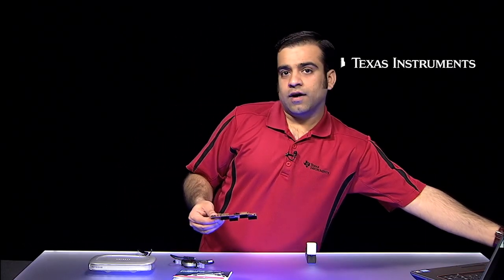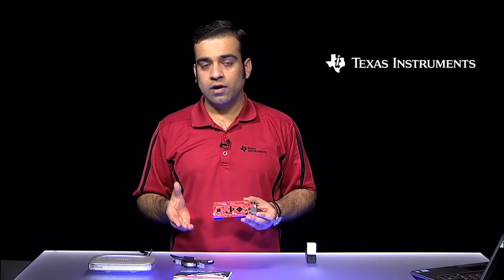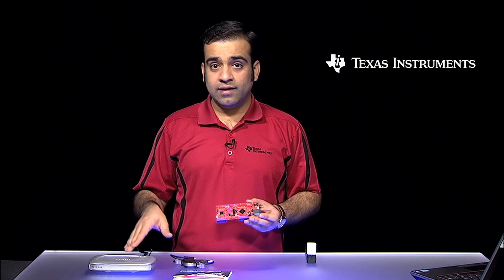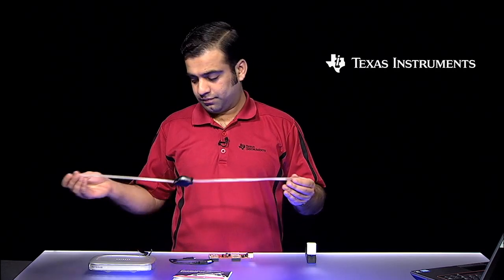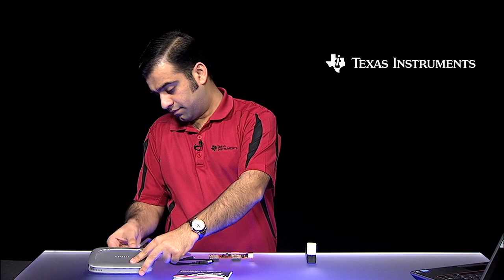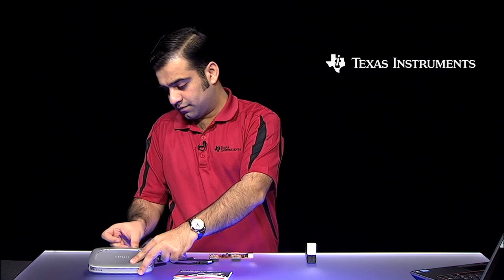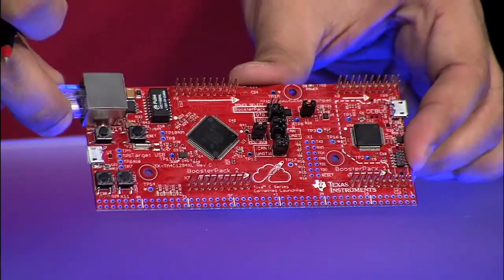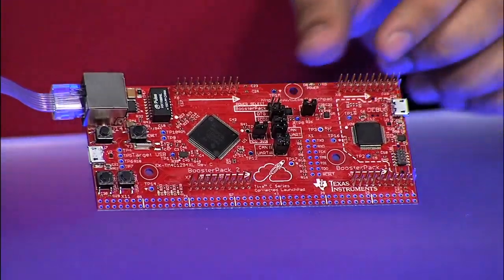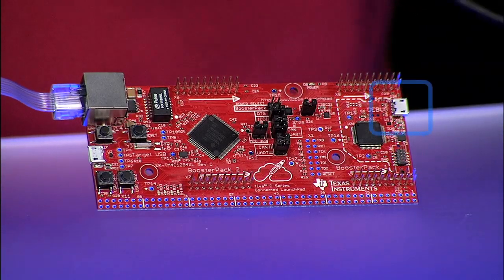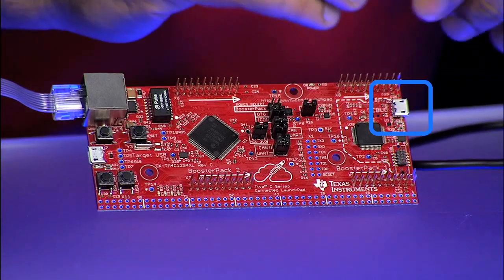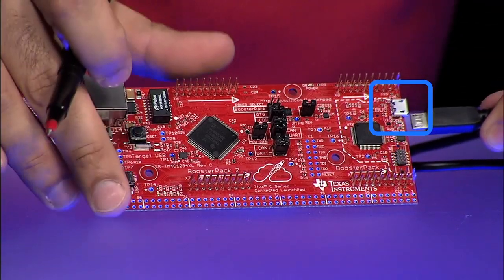To get started, let us first connect the launchpad to the Ethernet switch or the router using the Ethernet cable provided in the kit. Next, plug in the micro USB cable into the connector U22 to power the launchpad.